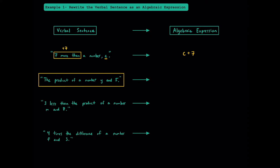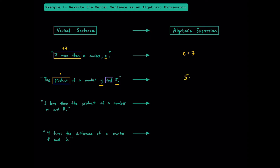The next one says: the product of a number Y and 5. Product means multiplication, so we know we're going to be multiplying two things together. Look for the keyword AND and see what's to the left and right of it. When multiplying a number and a letter together, we always write the number first and the letter second, and we don't write a multiplication symbol between them. So 5Y means 5 times Y, or the product of 5 and Y. When multiplying a letter and a number together, you always write the number first.